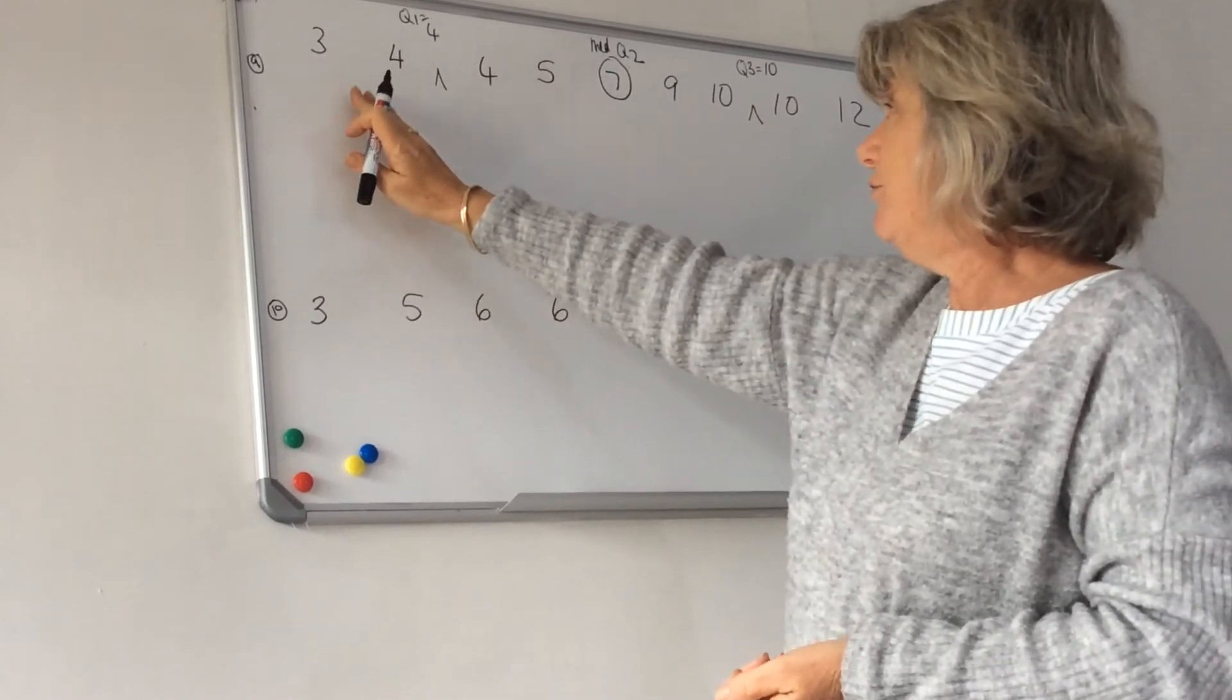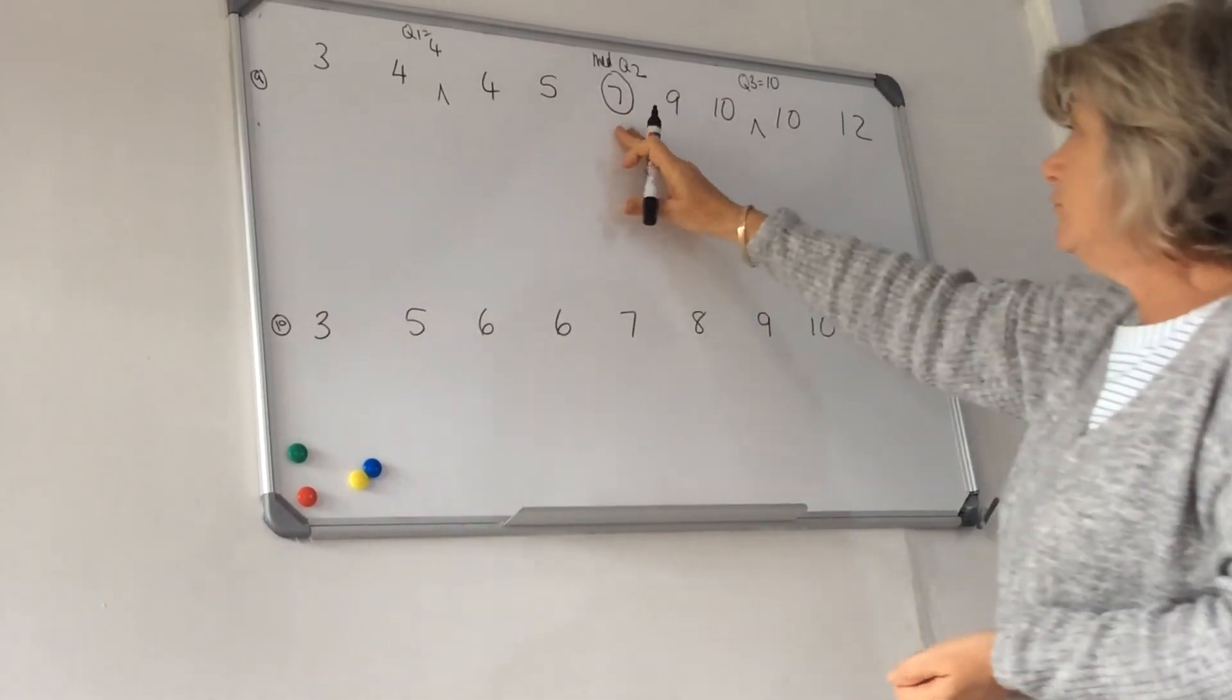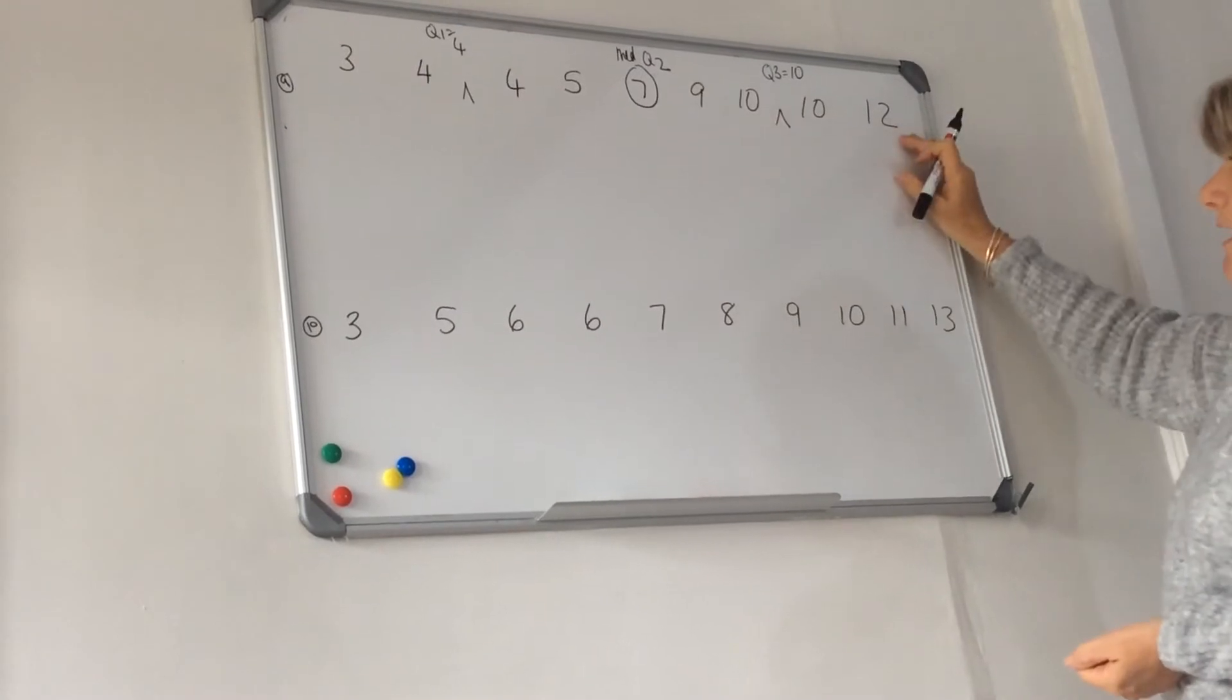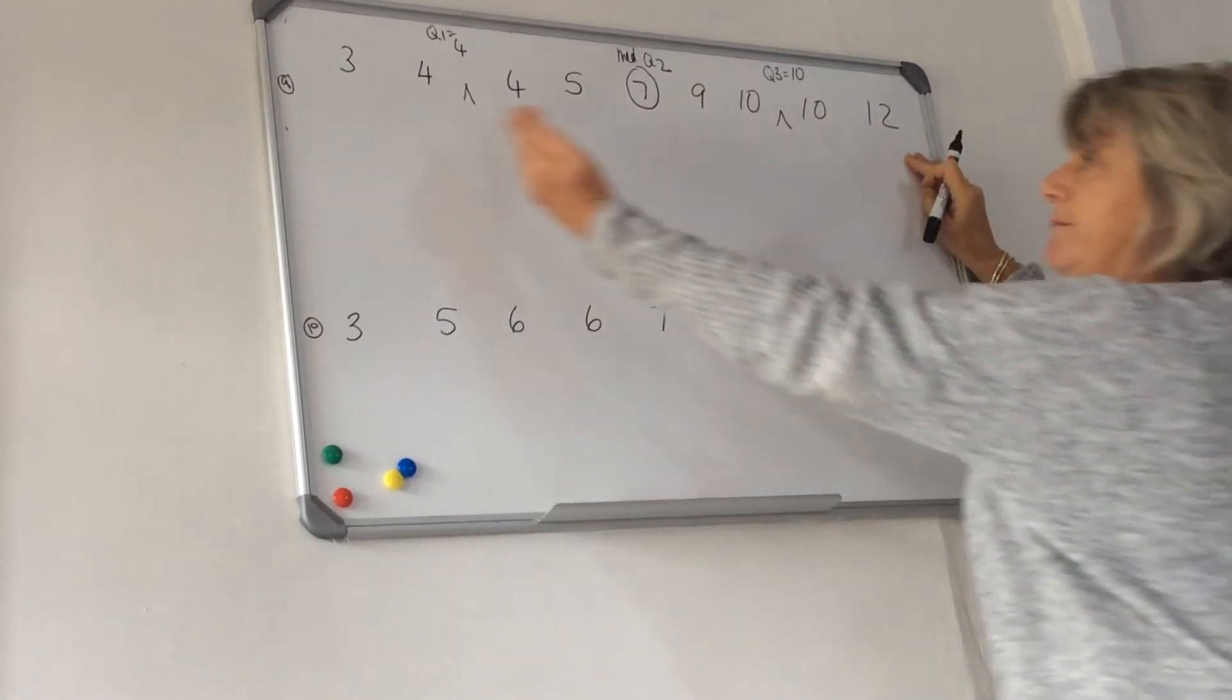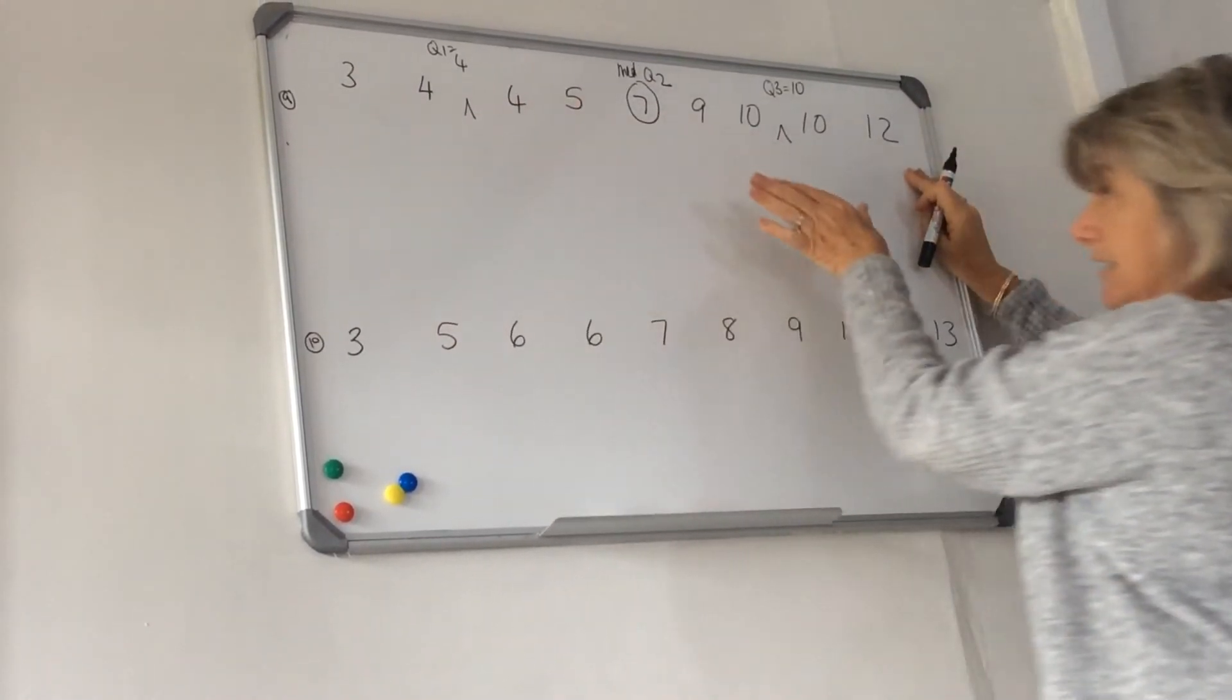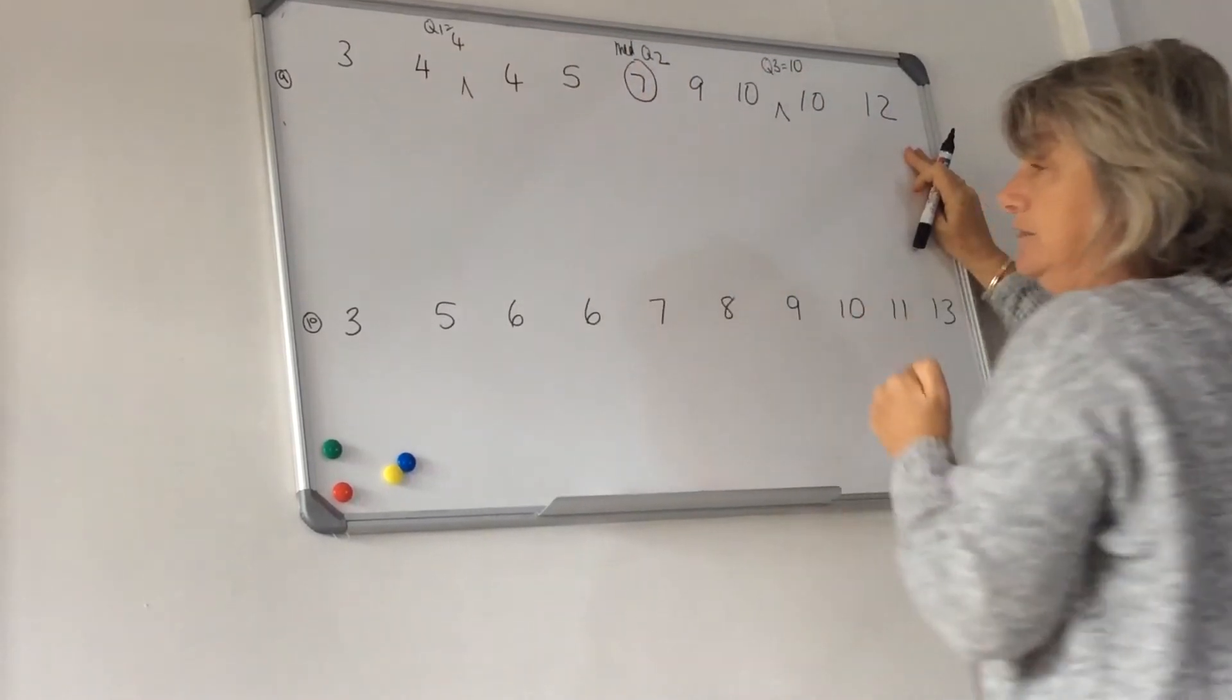Minimum is then three, quartile one four, quartile two seven, quartile three ten, and max twelve. The range is twelve minus three equals nine. The interquartile range is ten minus four equals six.